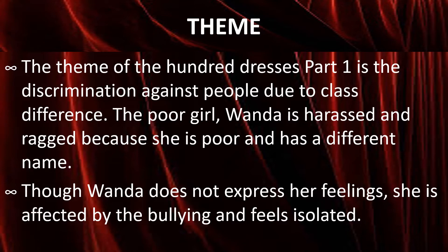The theme of 'The Hundred Dresses Part 1' is about discrimination against the poor and class difference. There is a poor girl called Wanda Petronsky, and she is harassed and ragged because she is poor. She also has a different name — different from other American children. Though Wanda does not express her feelings, she is affected by the bullying and feels isolated. The author wants to tell us that the victim may not express herself, yet she understands and feels bad about it.